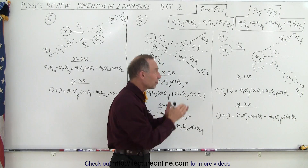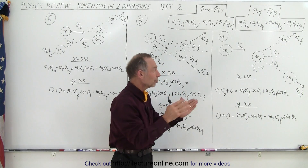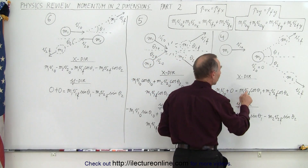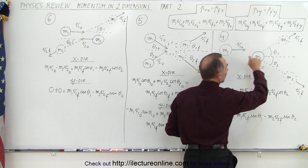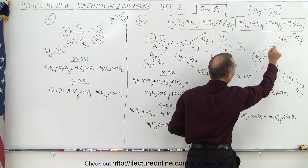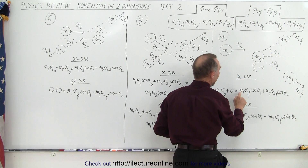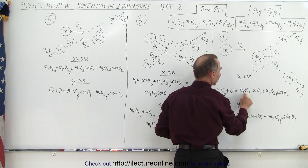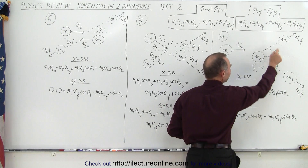But after they both collide, they both move out. Notice that in the x direction, the momentum vector for M1 will be M1 times the velocity in the x direction, which is the final velocity times the cosine of that angle.